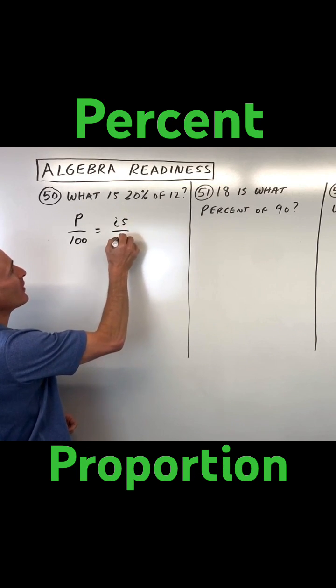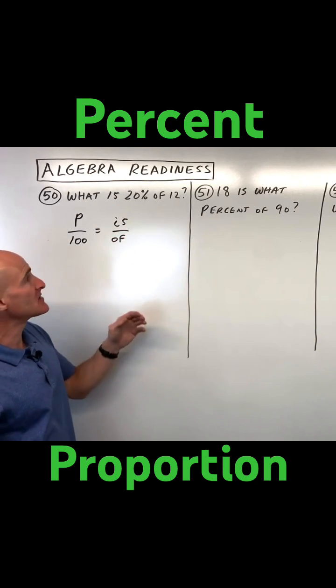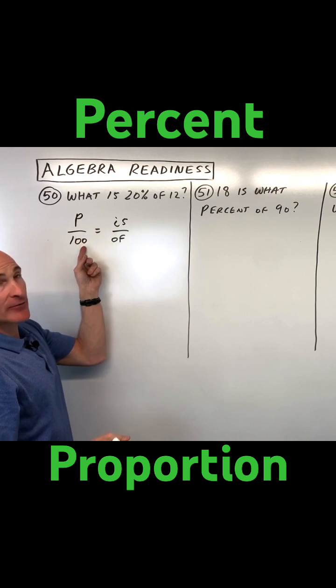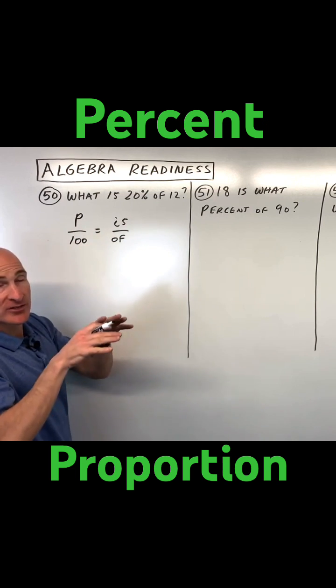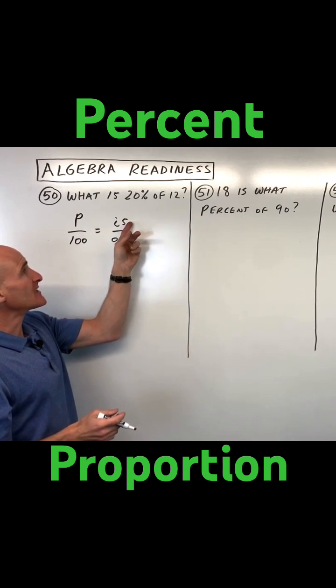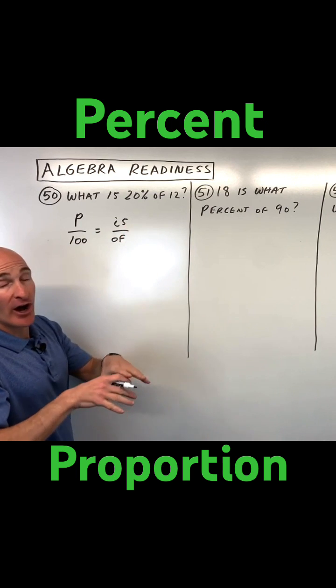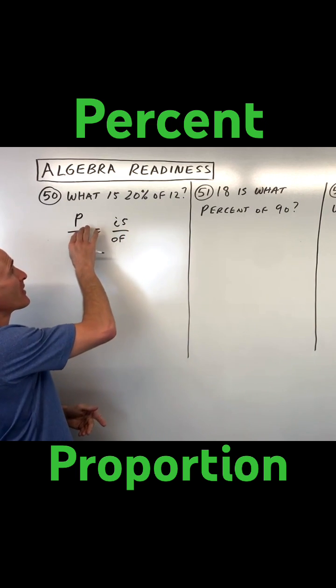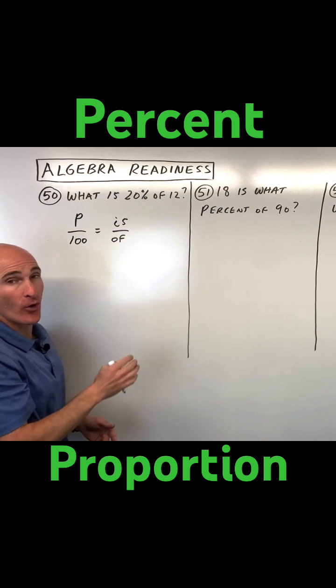Is over of. What does that mean? It means the percent is like the part out of a hundred, the part out of the whole. Hundred is like the whole amount. Equals is, which is the part, out of, which is the whole. So we have part out of the whole equals the part out of the whole.